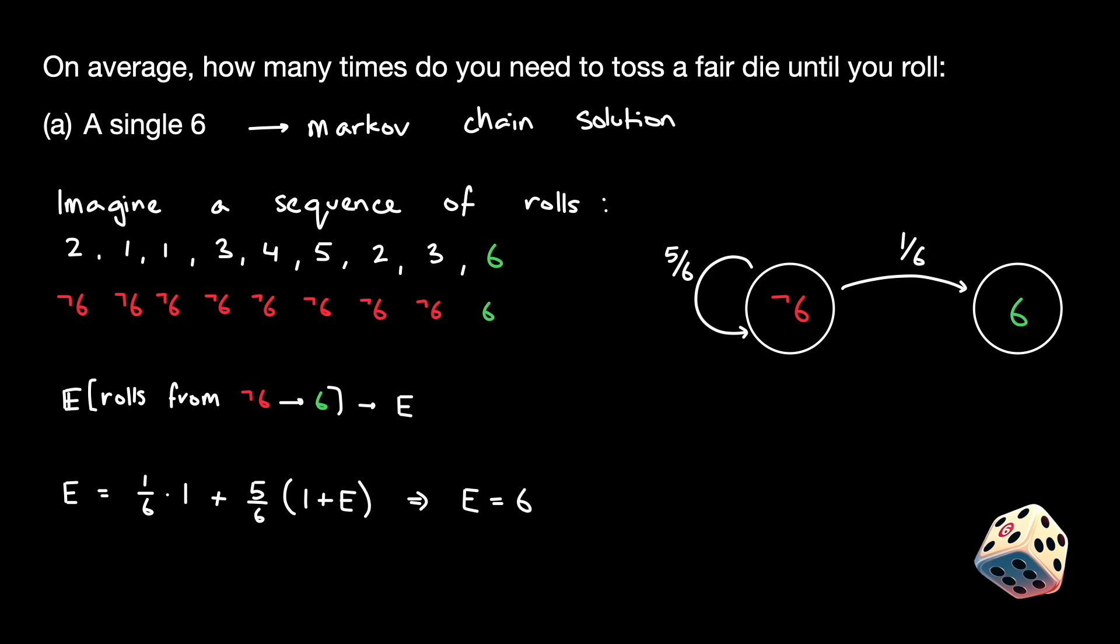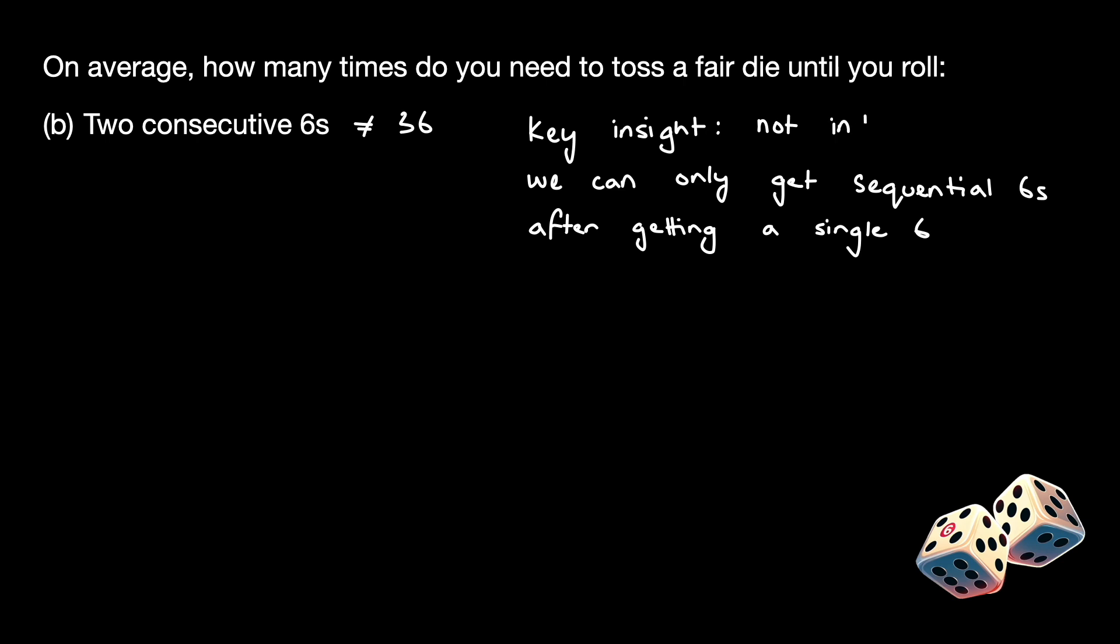Now, we move on to part B, the number of times we need to roll the fair die until we roll two consecutive sixes. Right off the bat, I'm going to tell you that the answer to this question is NOT 36. The key insight here is that we can only get sequential sixes AFTER we roll a single six. Therefore, getting sequential sixes is not independent to the event getting a single six.